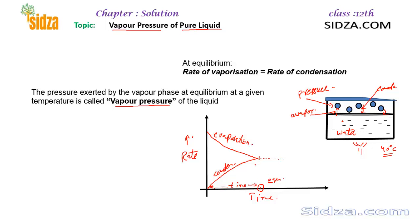At this equilibrium point, the rate of evaporation and condensation are both the same. That means the concentration of vapor molecules remains constant — it will not increase or decrease — because the same number of molecules change from liquid to gas as change from gas to liquid.